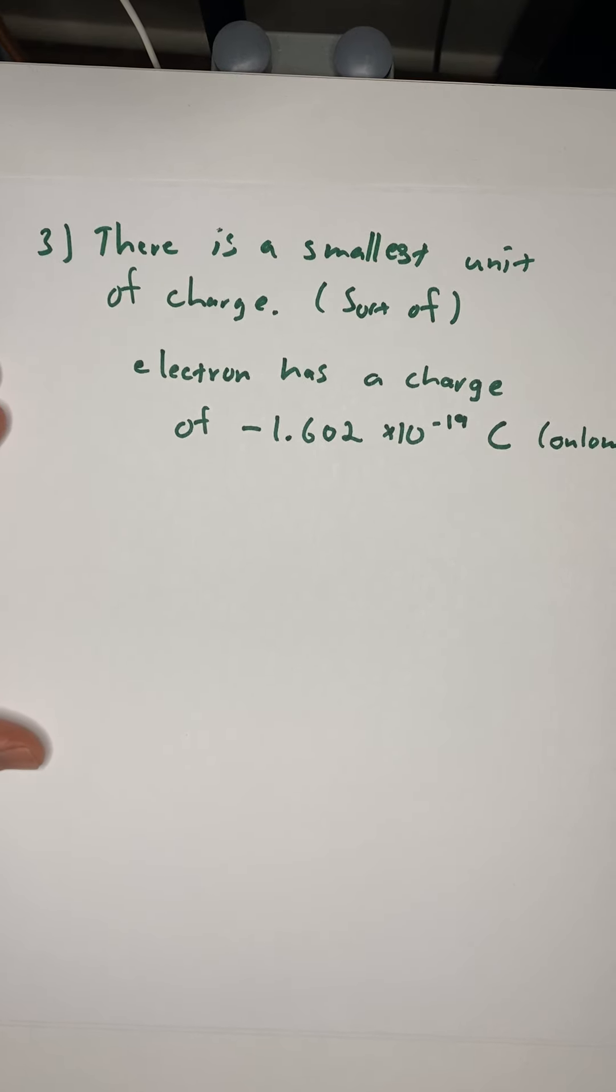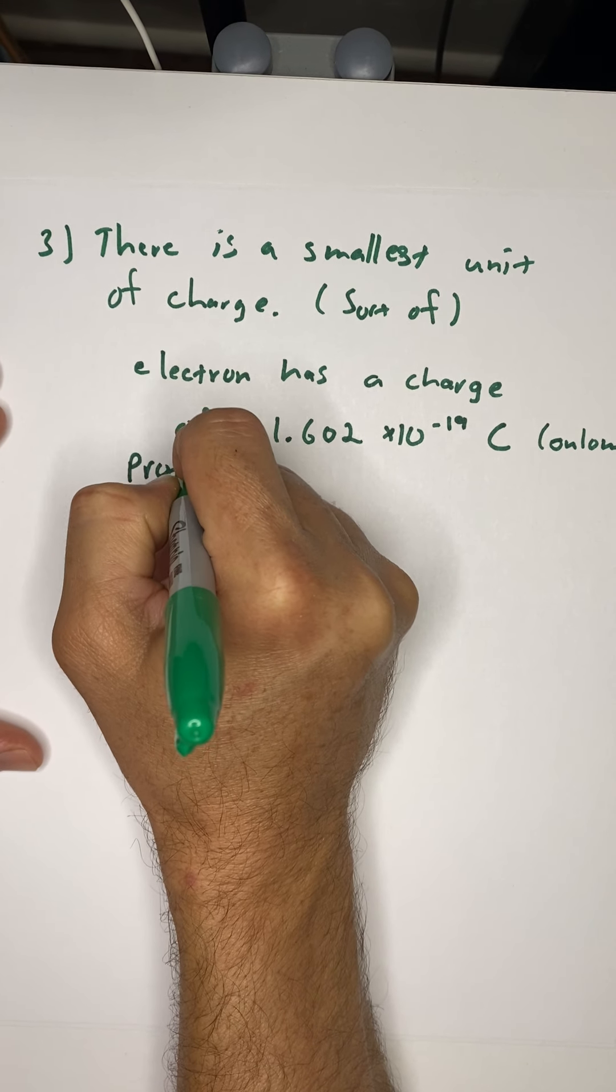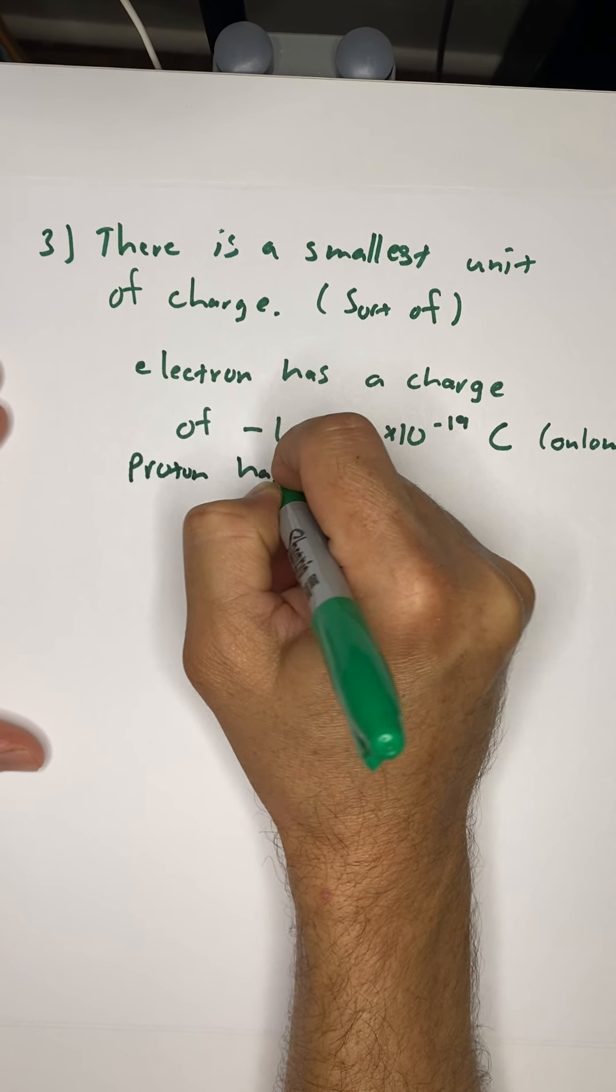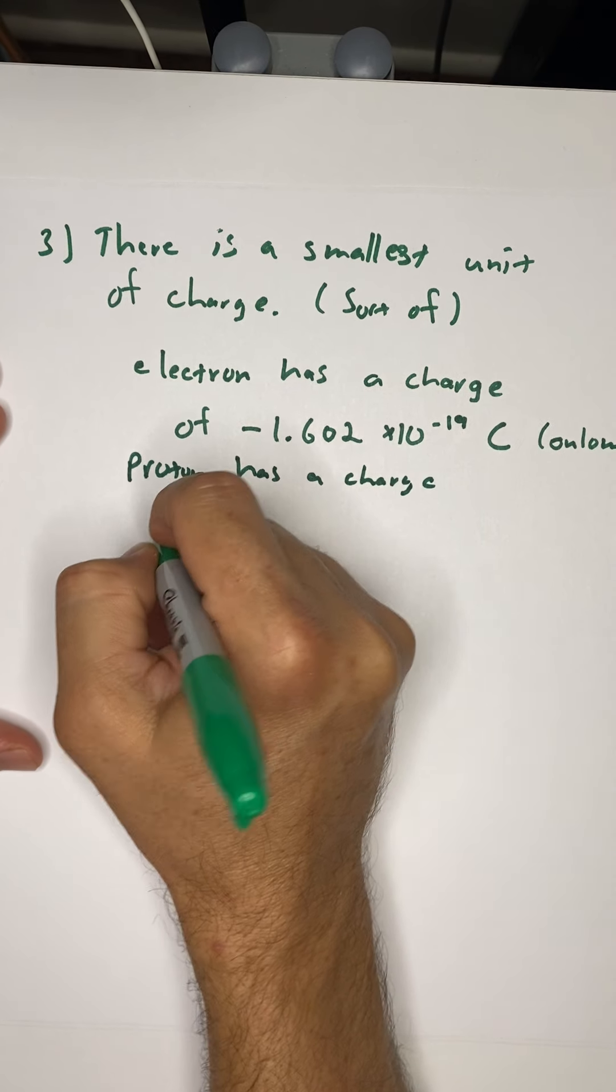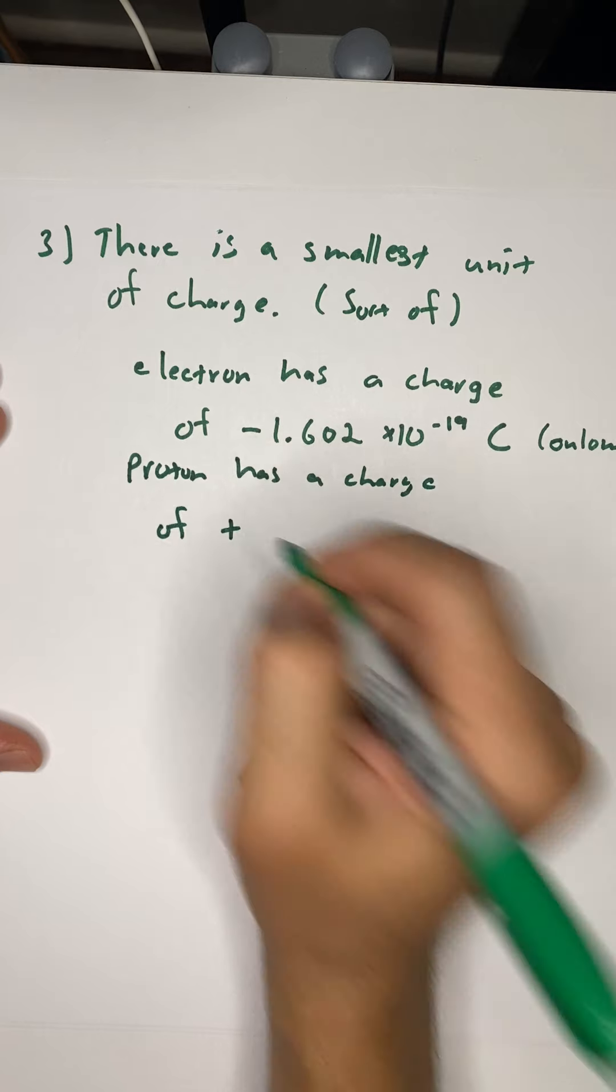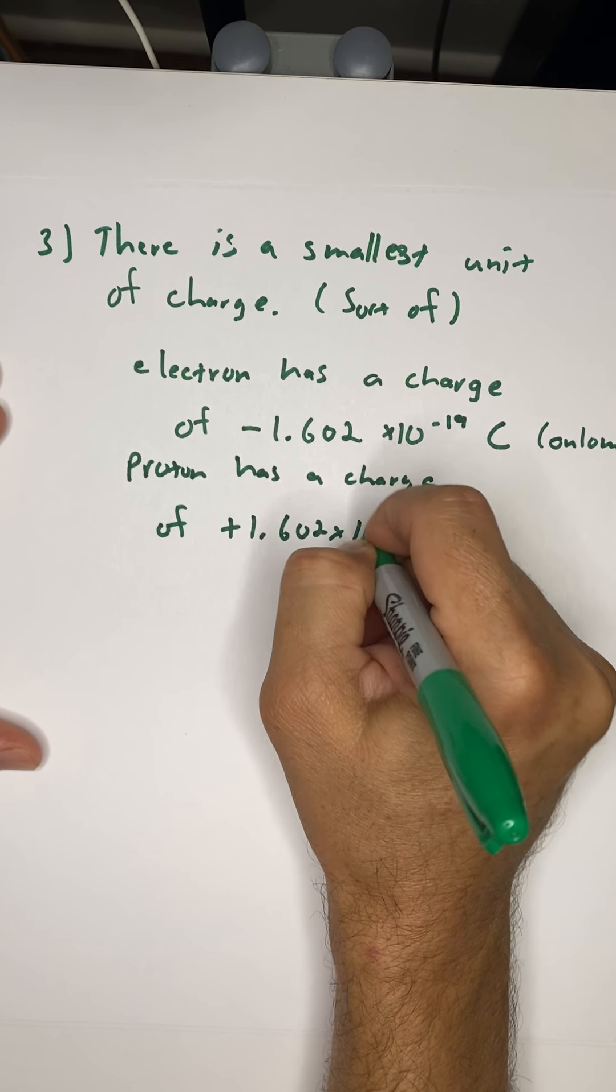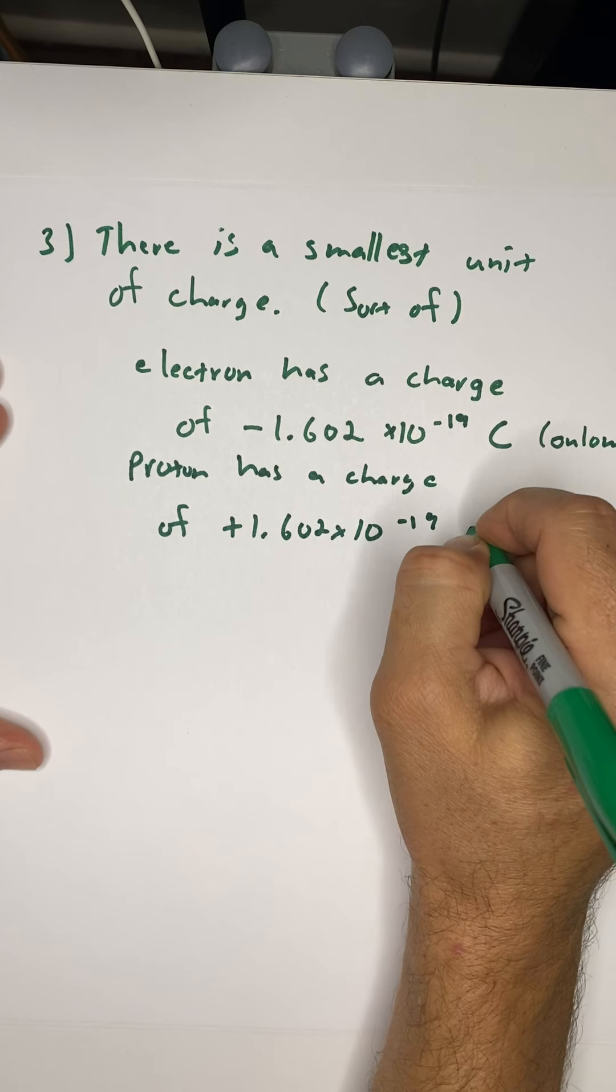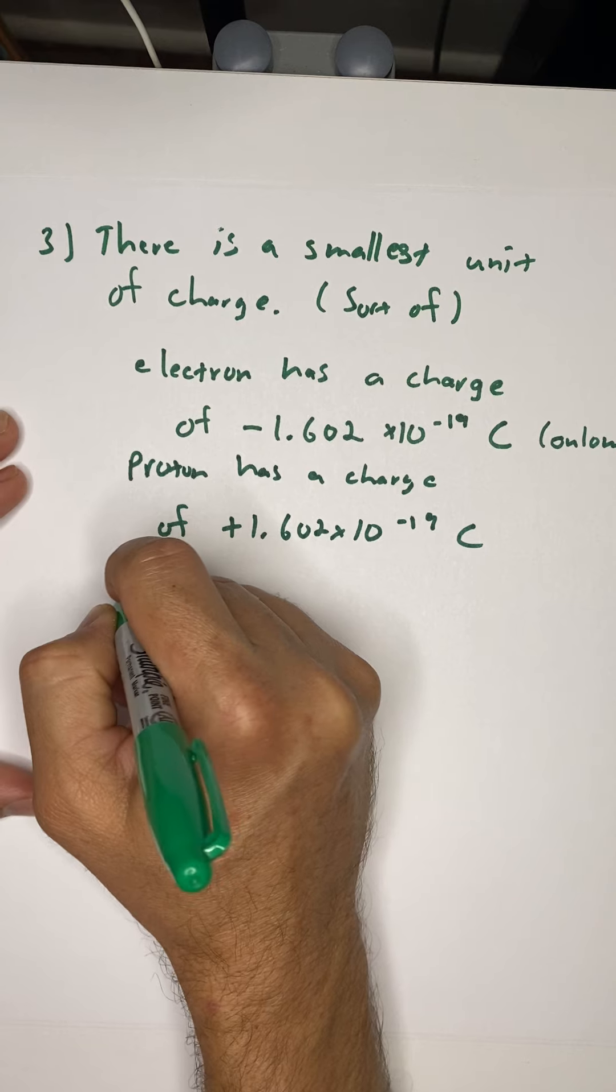But that is the charge of an electron. It is negative. A proton has a charge of positive 1.602 times 10 to the negative 19th Coulombs. We call this the smallest unit of charge, or the fundamental charge.